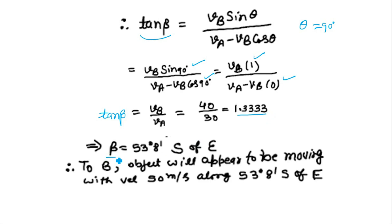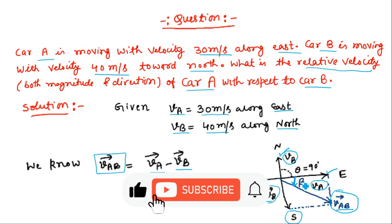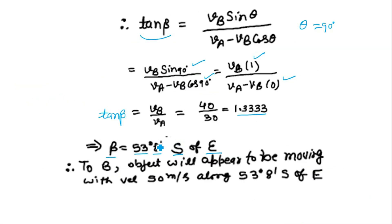On solving, we get the value of beta as 53 degrees 8 minutes. The direction, as clear from our figure, is south of east. This angle beta is between the line representing vector VAB and the east direction. Moving from east toward south by angle beta, we reach the line represented by the relative velocity VAB. Hence beta — 53 degrees 8 minutes — is toward south of east. We conclude that to car B, car A will appear to be moving with a velocity of 50 meter per second at an angle of 53 degrees 8 minutes to the south of east.